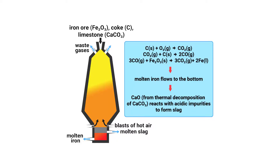We can react iron oxide with carbon monoxide, and on the screen now we can see all of the various reactions that happen to get to that point. You don't need to know all of these off by heart, but you do need to be aware that these reactions can happen. Iron oxide plus carbon monoxide makes iron and carbon dioxide, and we can see from this reaction that the carbon takes the oxygen out of the iron oxide and leaves iron by itself.